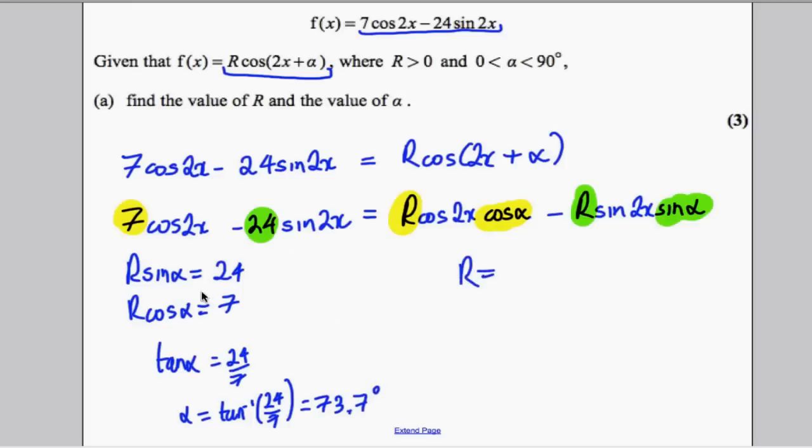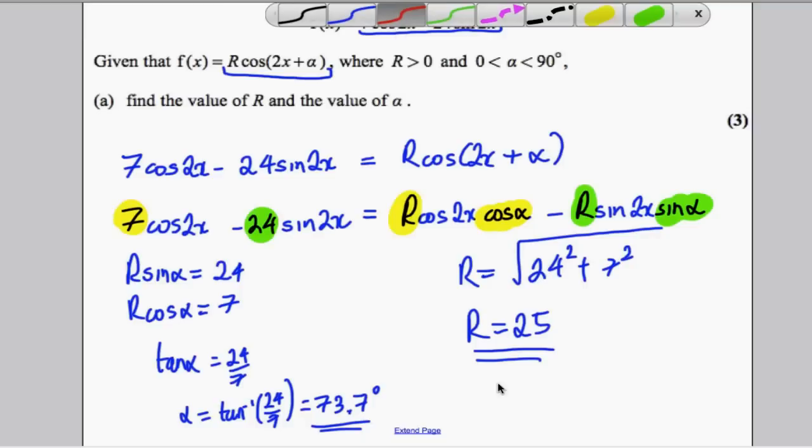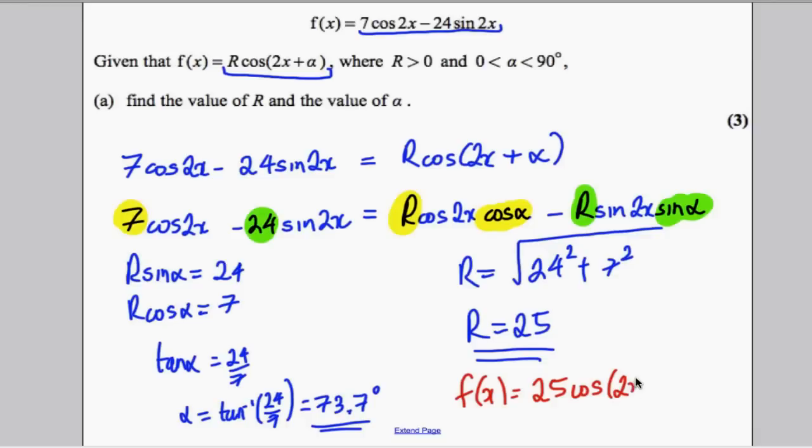R is always this number squared plus this number squared, square rooted. When you do that, you get R = 25. Therefore, f(x) can be written as 25cos(2x + 73.7). Always state that at the end.